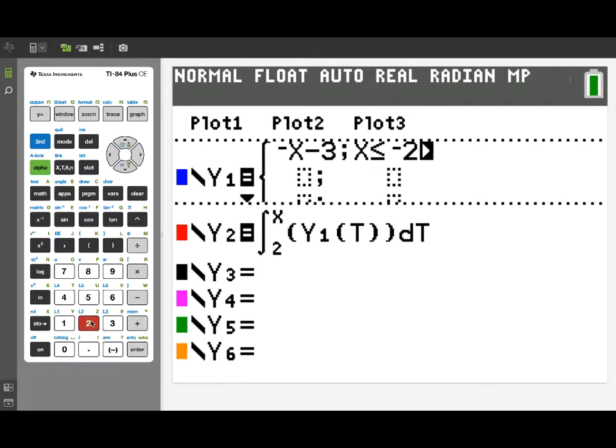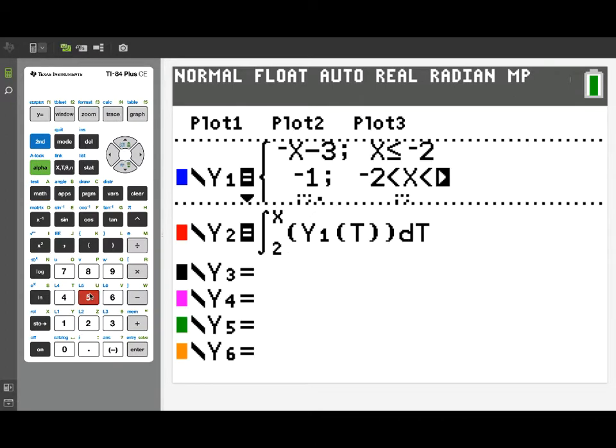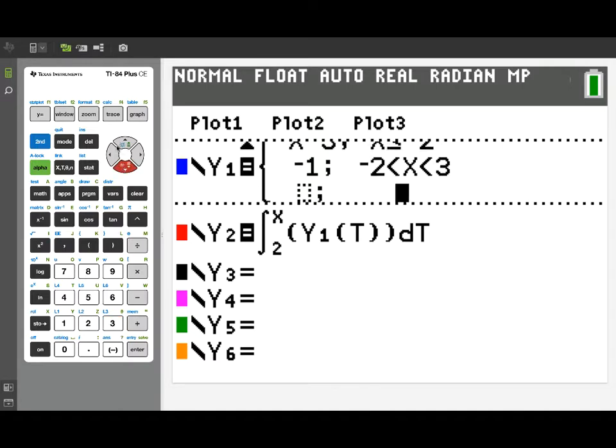For the next piece, I'll make that just constant. So my second formula will be just negative 1. That's the value that the first formula has at negative 2 so the pieces will be connected and I'll have a continuous graph. And we'll make the domain for this negative 1 piece be between negative 2 and positive 3. Now I can again go back to my test menu to pick up those inequality signs. And notice you can enter a compound inequality with no problem at all.